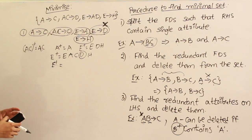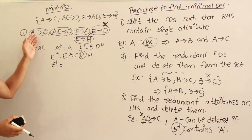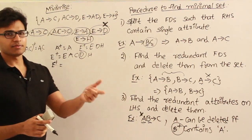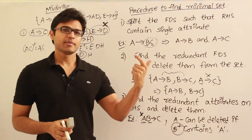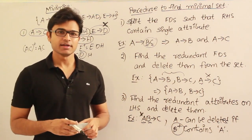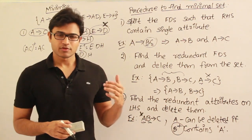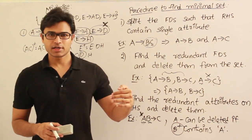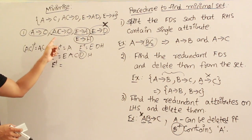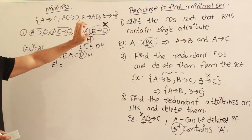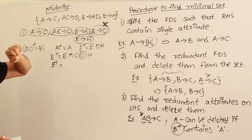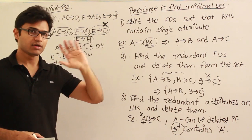It turns out that only E→D can be deleted, not the others. After deleting a production, do you need to check again? After deleting something, other productions won't become newly redundant. So you can do it in one cycle — go through it once, find what functional dependencies can be deleted, delete them, and stop. You need not do it a second time.